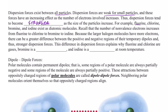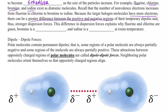For example, fluorine, chlorine, bromine, and iodine exist as diatomic molecules, just like oxygen. The number of non-valence electrons increases from fluorine to chlorine to bromine to iodine. Because the larger halogen molecules have more electrons, there can be a greater difference between the positive and negative regions of their temporary dipoles, and thus stronger dispersion forces. This explains why fluorine and chlorine are gases, bromine — having a bigger molecular weight and more electrons — is a liquid, and iodine is a solid at room temperature. It becomes easier for these bigger molecules to attract each other and condense or solidify. Those are called London dispersion forces.